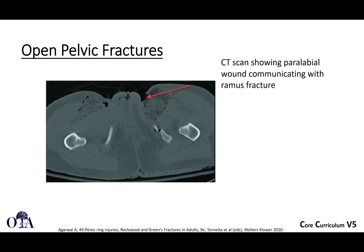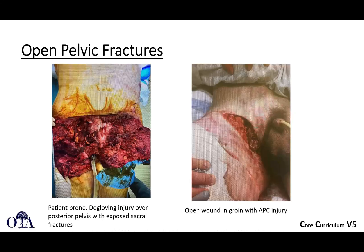A CT scan shows a paralabial wound communicating with the ramus fractures, with air tracking all the way to the fracture site. Additional images show a patient with a severe degloving injury of the posterior pelvis with exposed sacrum, and another patient with an open wound associated with an APC injury.